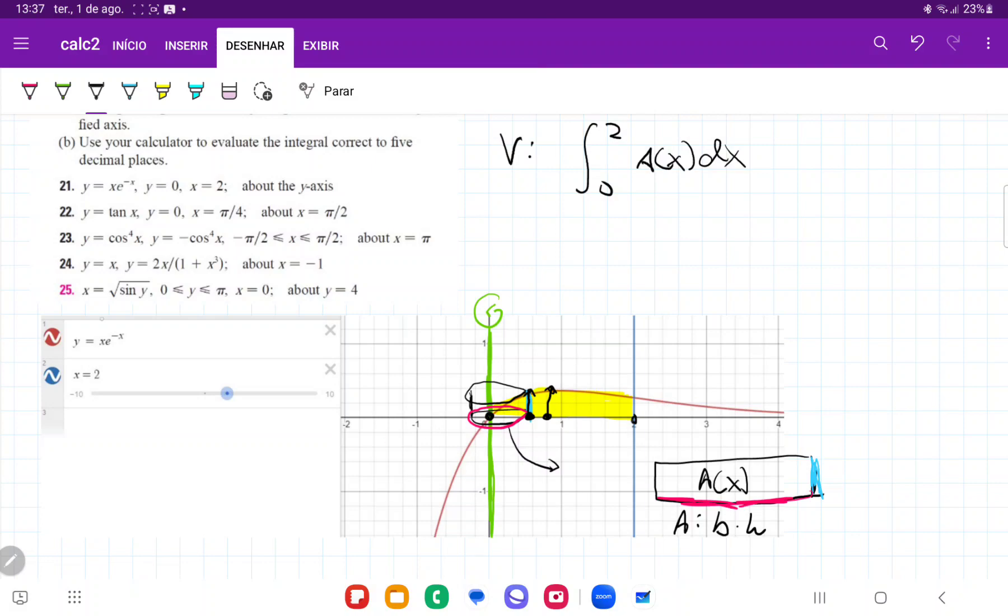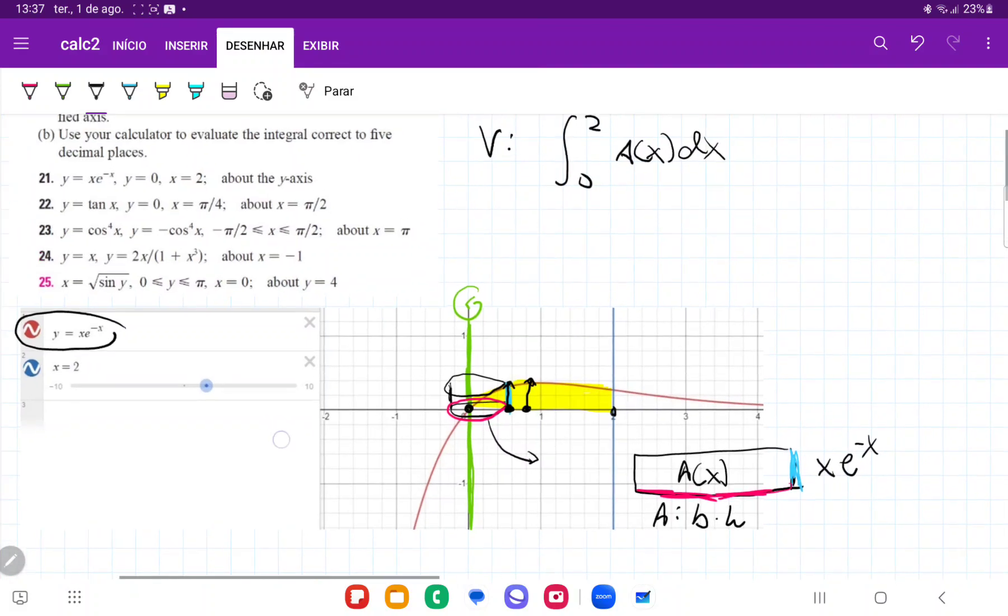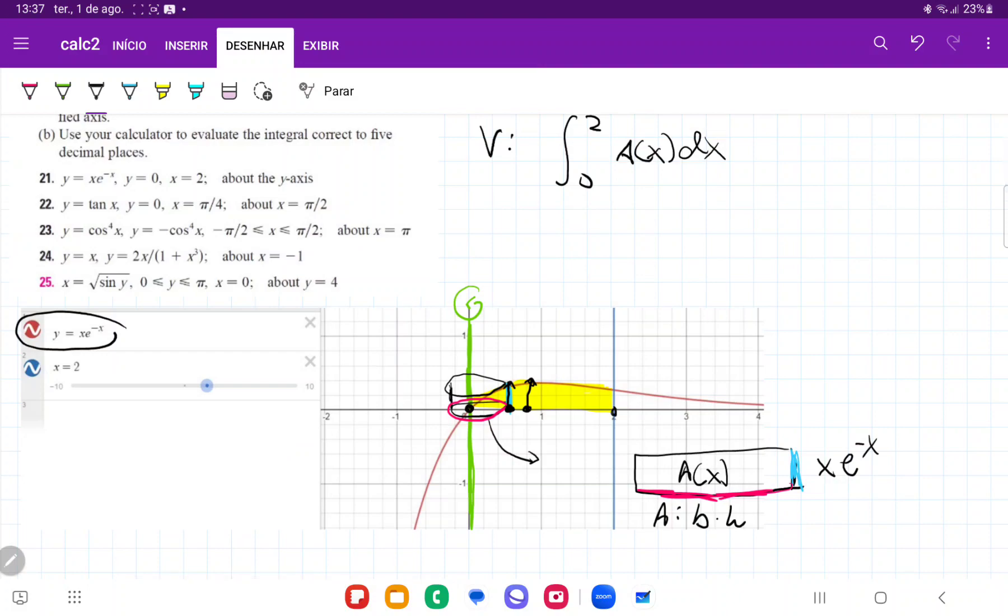So we can see here that this curve of xe^(-x), it is the curve that is going to define the height of our cylinders. So this here is x times e to the minus x.